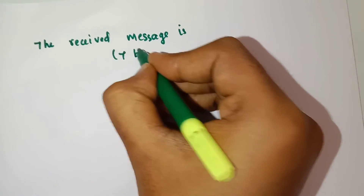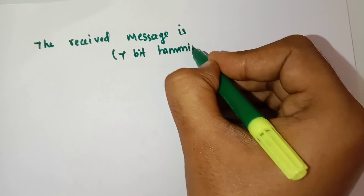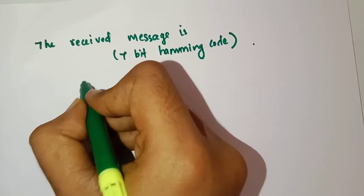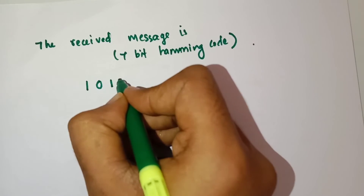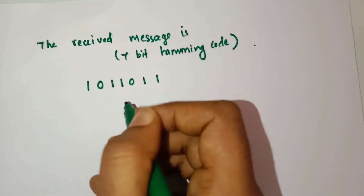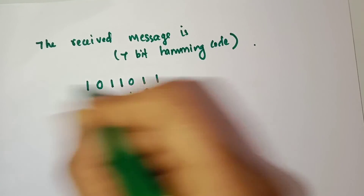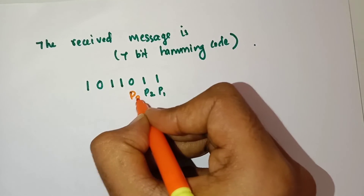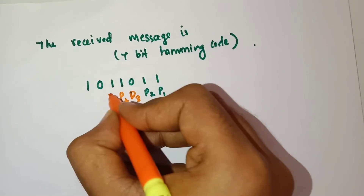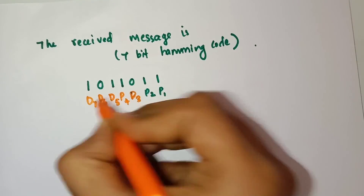So next we correct the error. The received 7-bit Hamming code is: 1, 0, 1, 1, 0, 1, 1. The positions are: P1=1, P2=0, D3=1, P4=1, D5=0, D6=1, D7=1. In the 5th position, that is D5, there is an error.